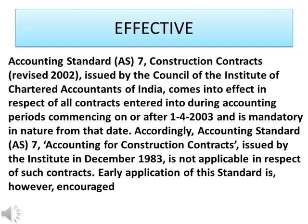Accordingly, Accounting Standard AS-7, Accounting for Construction Contracts, issued by the Institute in December 1983, is not applicable in respect of such contracts. Early application of this standard is, however, encouraged.